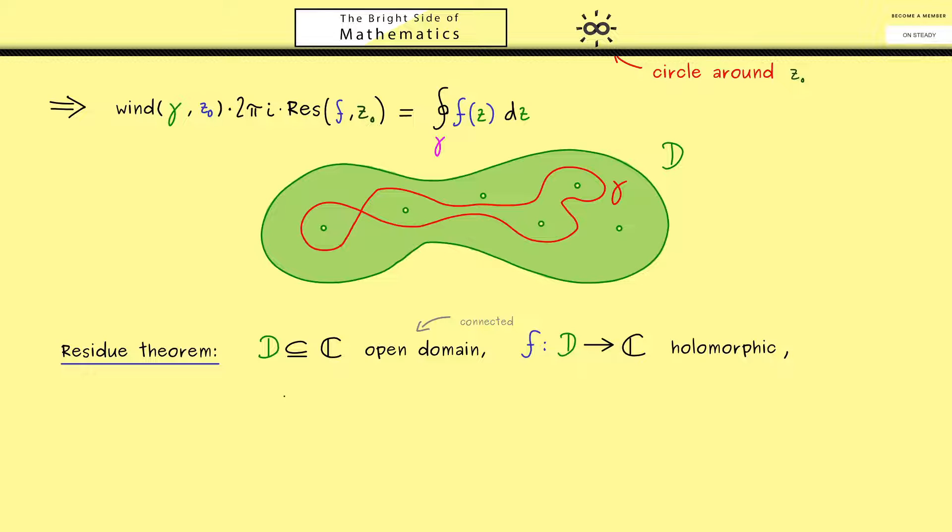And also again this function now should have finitely many singularities and we call them Z1, Z2 and so on. So you can imagine this like in the picture before where we now enumerate all the isolated singularities.